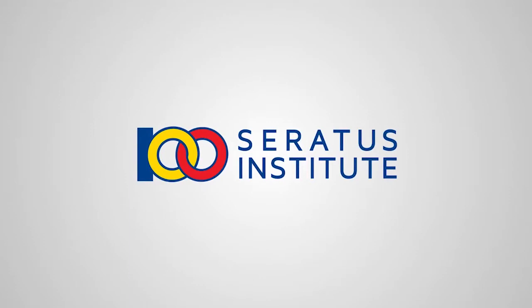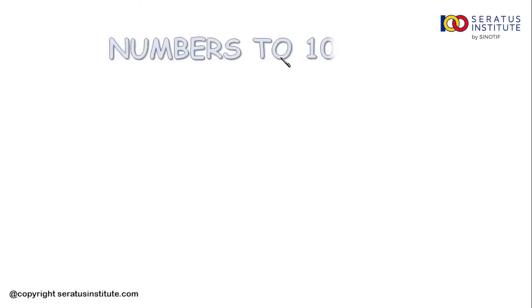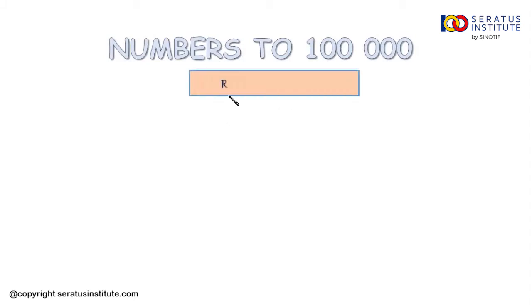Hello, Sombat Seratus, still with me Siti Akhiriya in Seratus Institute program. This time we are going to talk about numbers to 100,000. This section is the last section from this chapter — rounding and estimation. In this section there are five main points that we will discuss about.